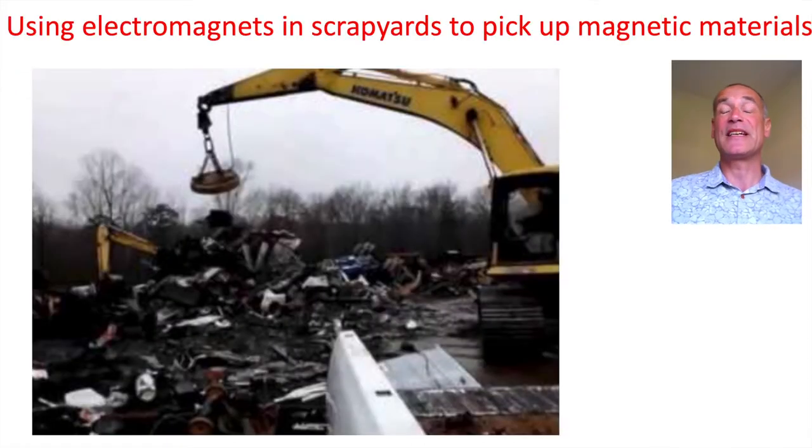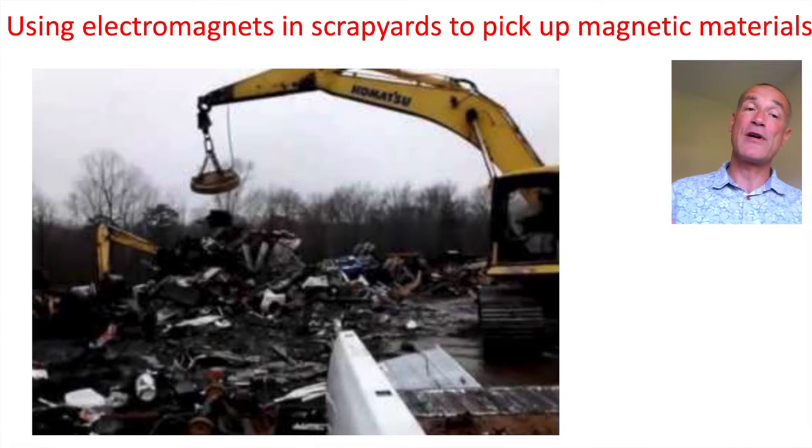So the most common use of an electromagnet is to pick up magnetic materials. For instance, at a scrap yard, because most metals in cars and things have iron or steel in them.